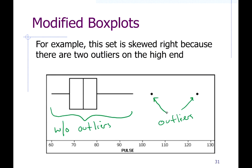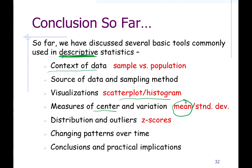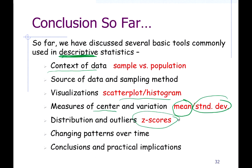You cannot make a box plot without first computing the five number summary: Q1, median, Q3, maximum, and minimum. A box plot is a picture of the five number summary, and a modified box plot is a picture of the five number summary once outliers are removed. We've talked about a lot of different topics in descriptive statistics — context of data, discrete vs. continuous, qualitative vs. quantitative, levels of measurement, sampling methods, visualizations, measures of center, measures of variation, and now z-scores and box plots. The mean and standard deviation are the two most important going forward.